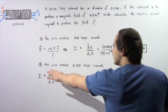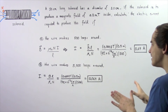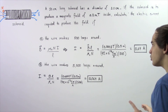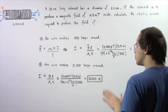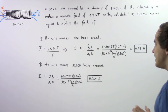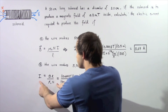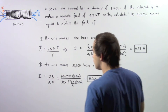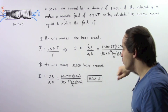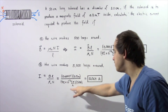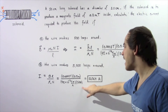Now let's move on to part B. Everything remains constant except we increase the number of loops from 500 to 5,000. We use the same equation, solve for I, and plug in our values: the same magnetic field B, the same length L, and the same permeability constant mu naught.